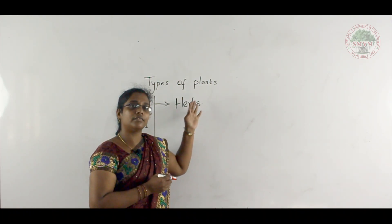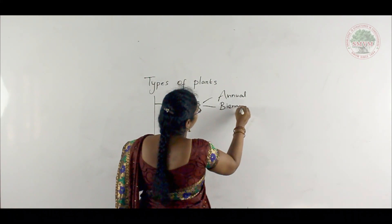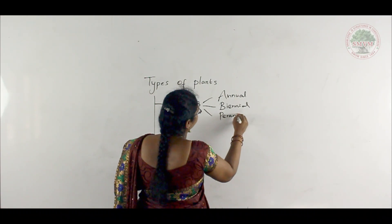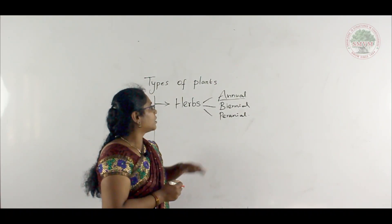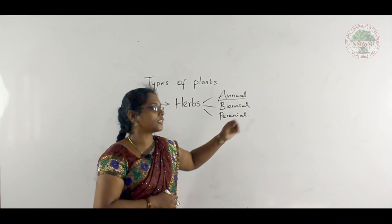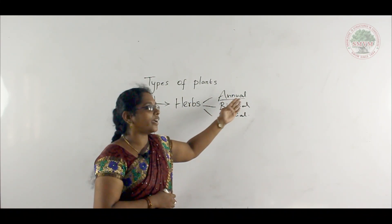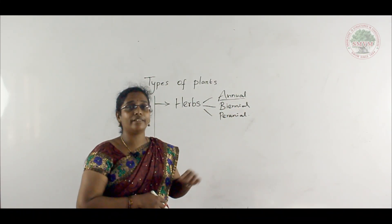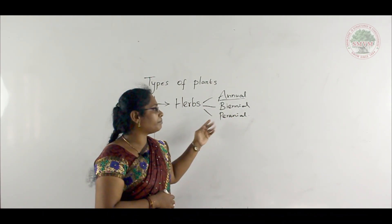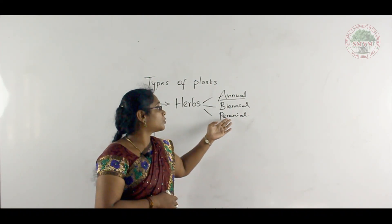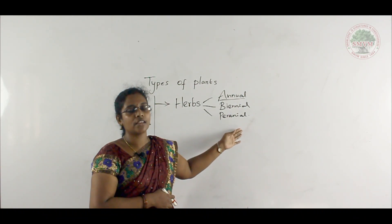Herbs are further divided into annual, biennial, and perennial. Annual plants can only live for one year — for example, cereals and paddy. Biennial plants can live for two years — for example, carrot. Perennial plants can live for many years, and most trees come under perennial plants.